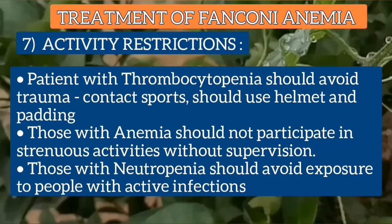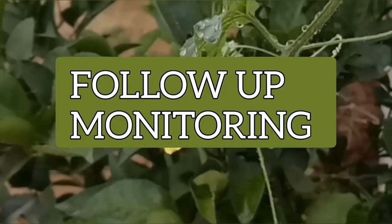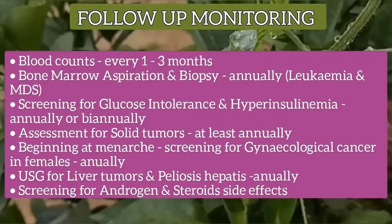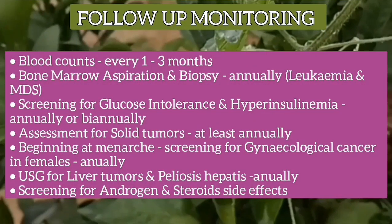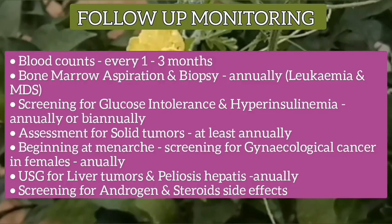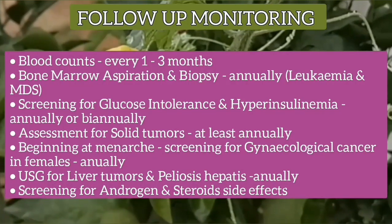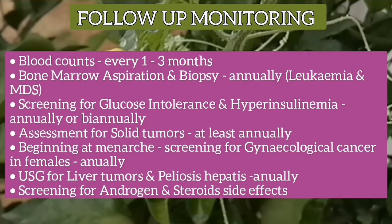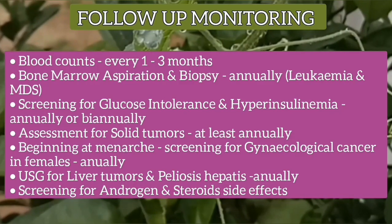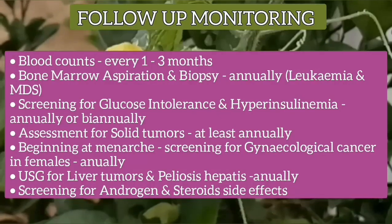For follow-up monitoring, blood counts should be done every 1 to 3 months. Bone marrow aspiration and biopsy should be done annually for leukemia and myelodysplasia syndrome. Screening for glucose intolerance and hyperinsulinemia should be done annually or biannually. Surveillance for solid tumors should be done annually. Beginning at menarche, screening for gynecological cancer in females should be done annually. Ultrasonography for liver tumors and peliosis hepatitis should also be done annually, along with serial screening for androgen and steroid side effects.